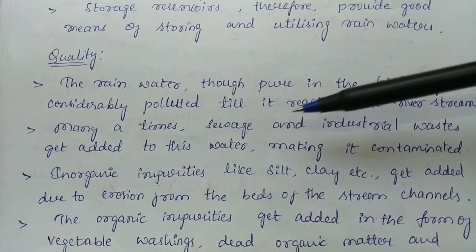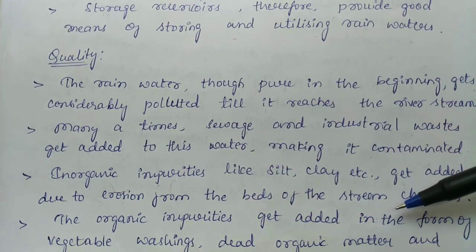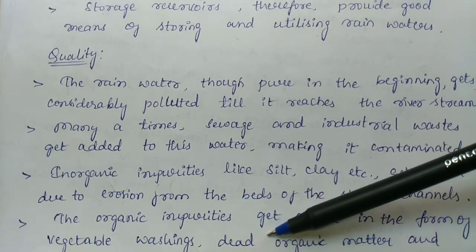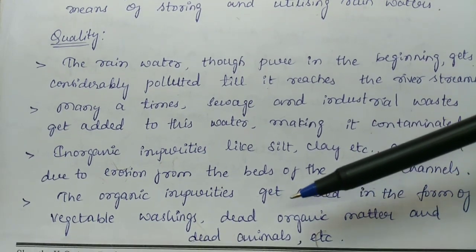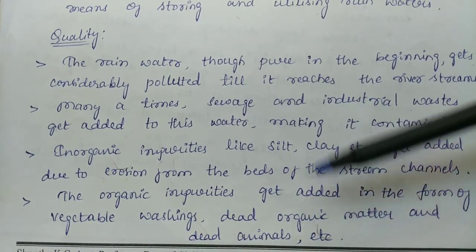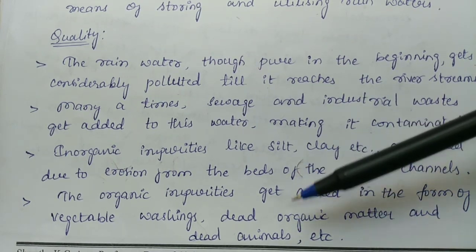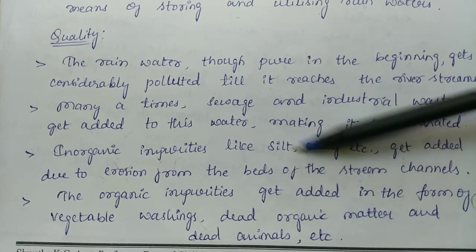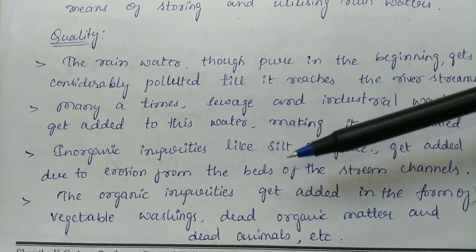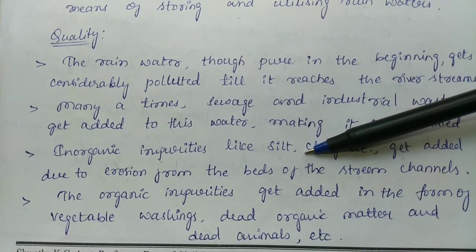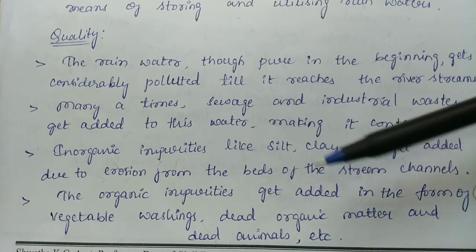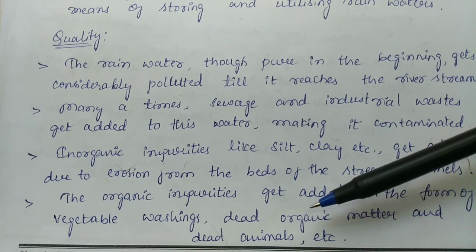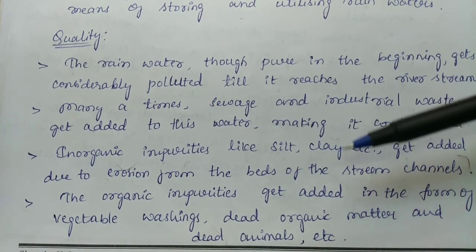Organic impurities also get added along with inorganic impurities in the form of vegetable washings, dead organic matter, and dead animals. Organic sources are very dangerous since they decay with respect to time. Inorganic impurities can be more easily removed; whenever particles are greater in size they generally settle to the bottom of the river as sediment. However it is very difficult to deal with organic impurities, which must be removed before supply to the public.